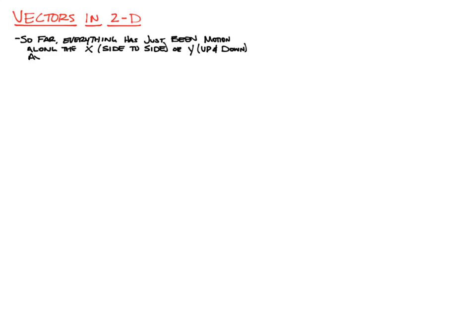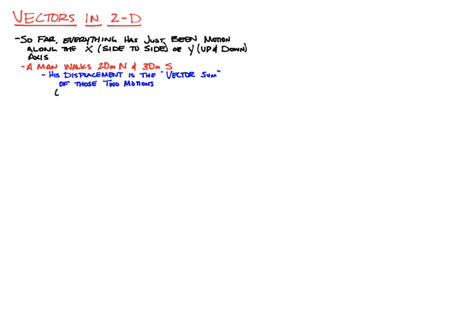Just for a quick review of what we've done: we're going to have a man walk 20 meters north and 30 meters south. His total displacement is the vector sum of those two motions. There are two ways we can look at solving that. One of those ways is graphically — we draw a vector representing 20 meters north and add that to a vector going 30 meters south.